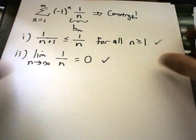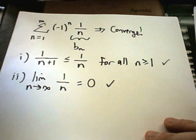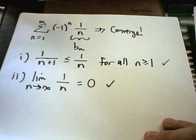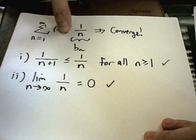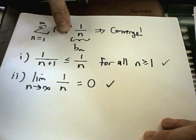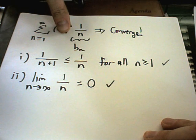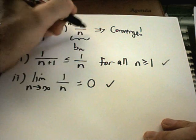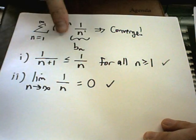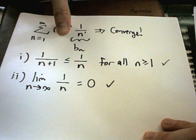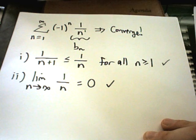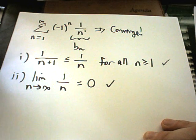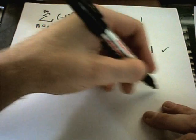So notice it's very important to have the negative 1 to the n power here. If we didn't have that, plain old 1 over n, remember that's called the harmonic series. And that's a special case of the p series, where p is equal to 1. And this would now be a divergent series without the negative 1 to the n. But with that negative 1 to the n in there, this is a convergent series. And we're now finished.